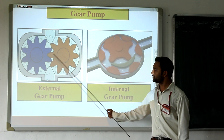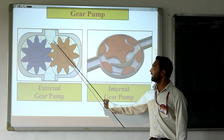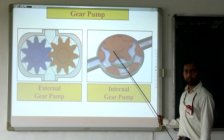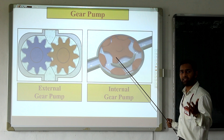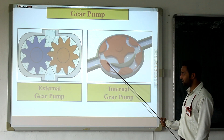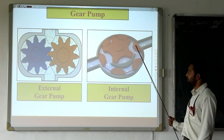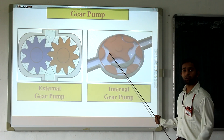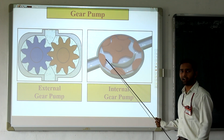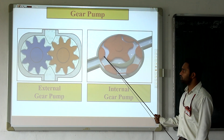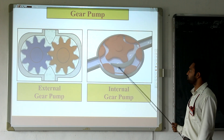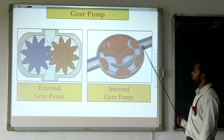In case of the external gear pump, whenever the two gears mesh, discharge is possible, and when the gears are out of mesh, suction is possible. Similarly, in case of the internal gear pump, one rotor and one idler are provided, which creates two regions — one is a lower pressure region at the suction side and one is a higher pressure region at the discharge side. Whenever gears are in mesh, that generates discharge, and when gears are out of mesh, that indicates suction of fluid.